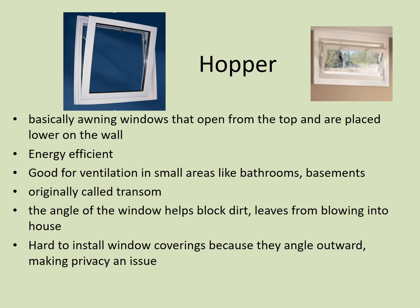Next we have the hopper, which is the inverted awning window. These open from the top and are placed low on the wall, so you'll typically see them in basements and bathrooms. They were also once known as transoms. They're great for ventilation, and the angle of the window helps block dirt, leaves, and debris from blowing in. However, it is very hard to install coverings, privacy can be an issue, and you cannot really use them during rain since water can come right into your house.